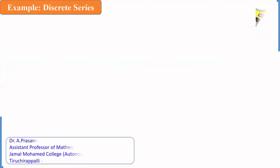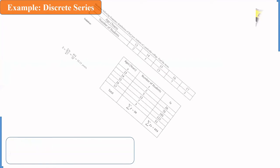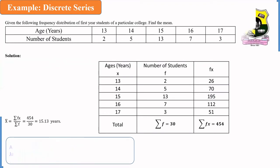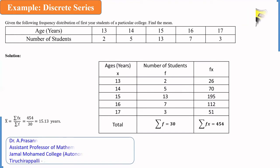Now, I shall explain how to calculate the arithmetic mean for discrete series. Here, age in years, the values are 13, 14, 15, 16, 17. Number of students: in 13 years of age 2, 14 years of age 5, 15 years of age 13, 16 years of age 7, 17 years of age 3.